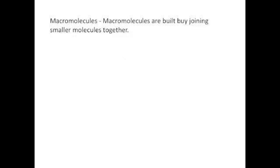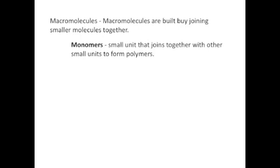What is a macromolecule? A macromolecule is something that is built by joining together smaller molecules. Those smaller molecules are referred to as monomers, small units that we put together, and then they are put together to make a polymer. Mono meaning one or single, that would be just a single unit.